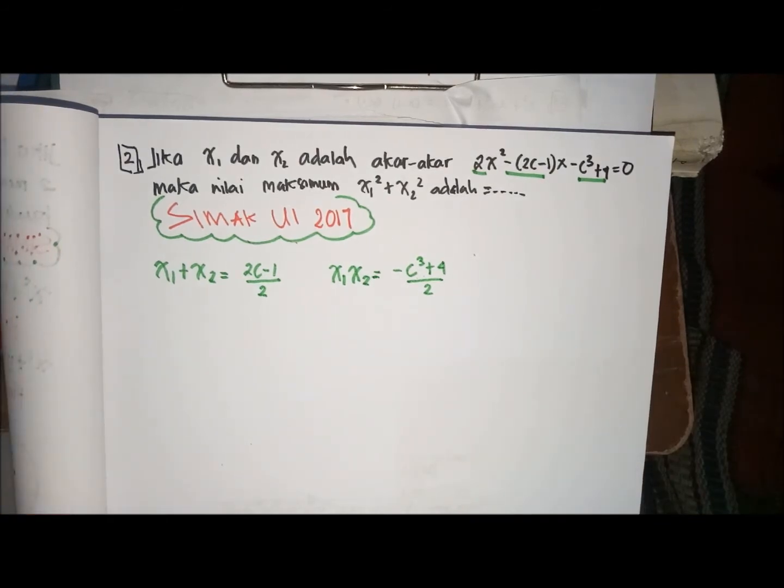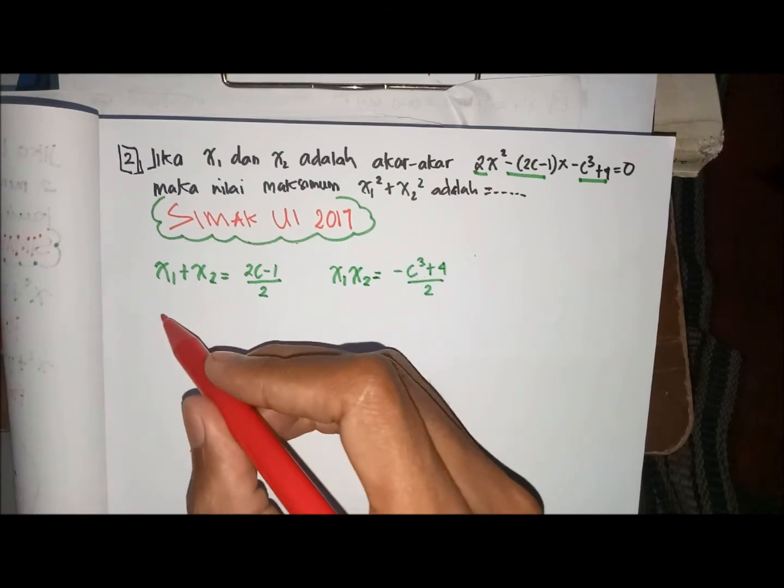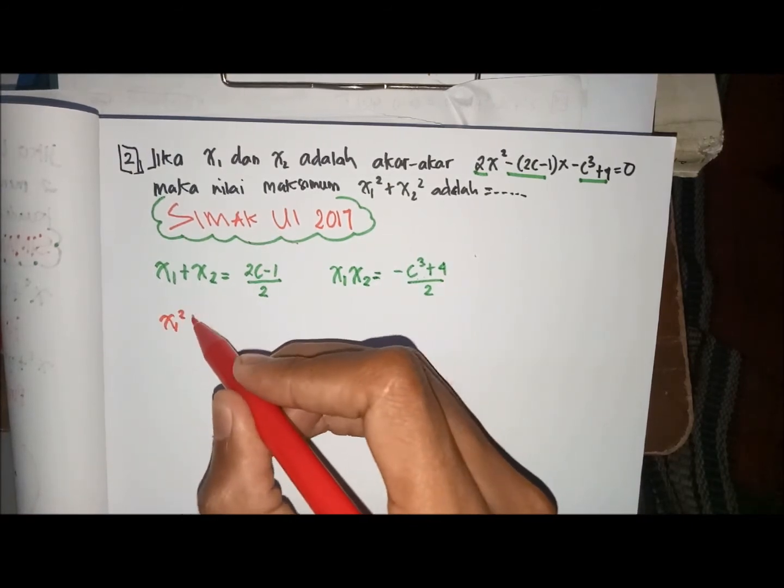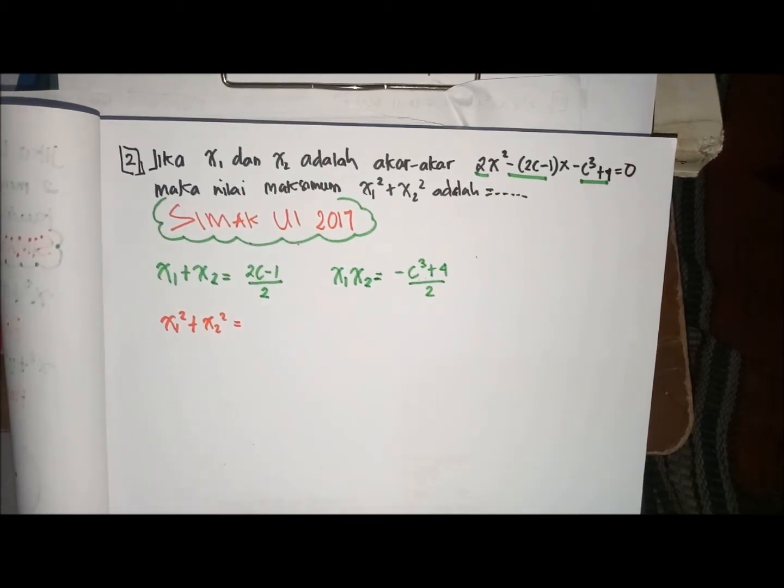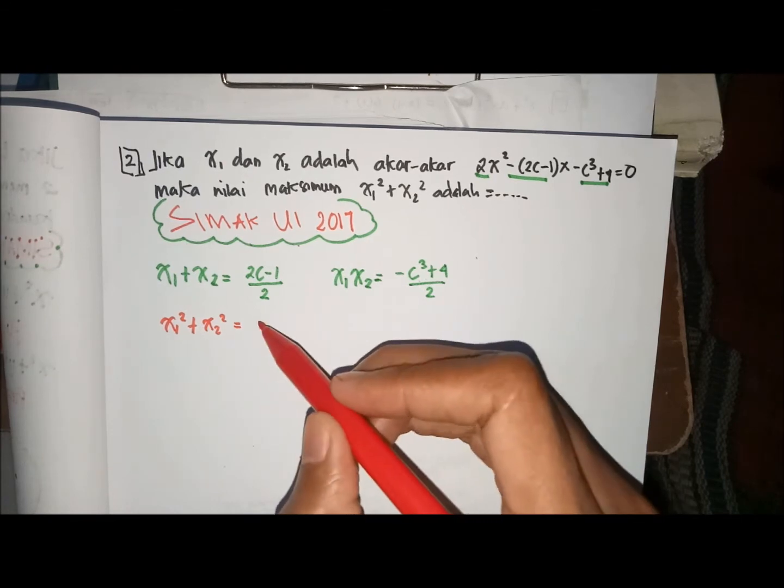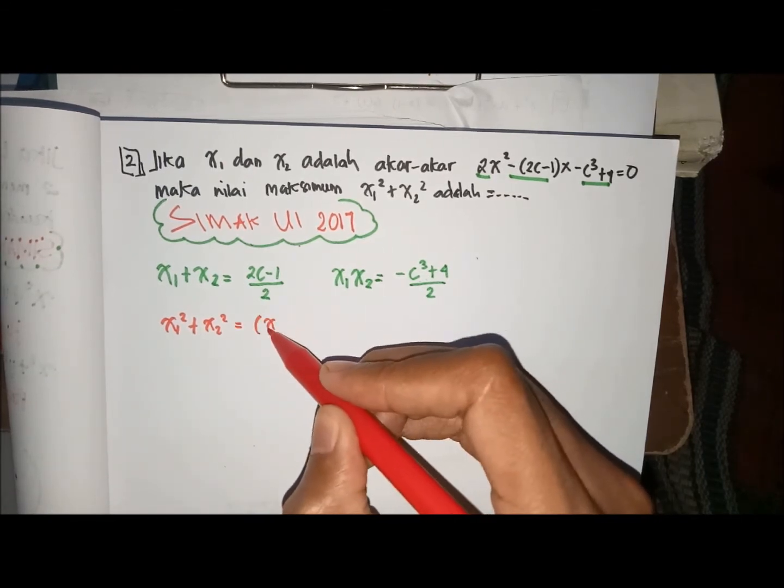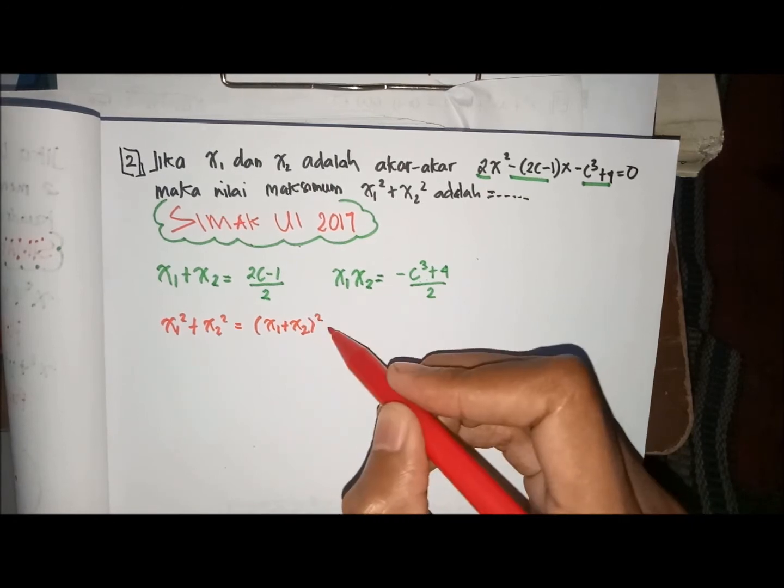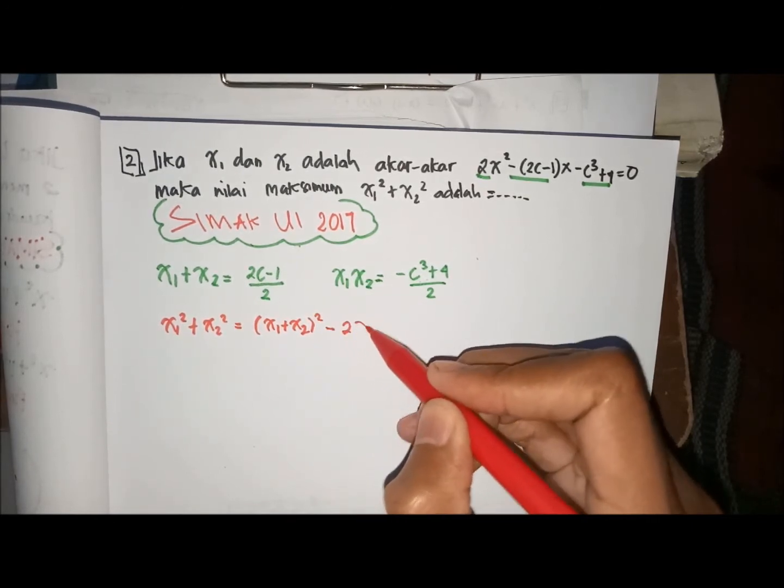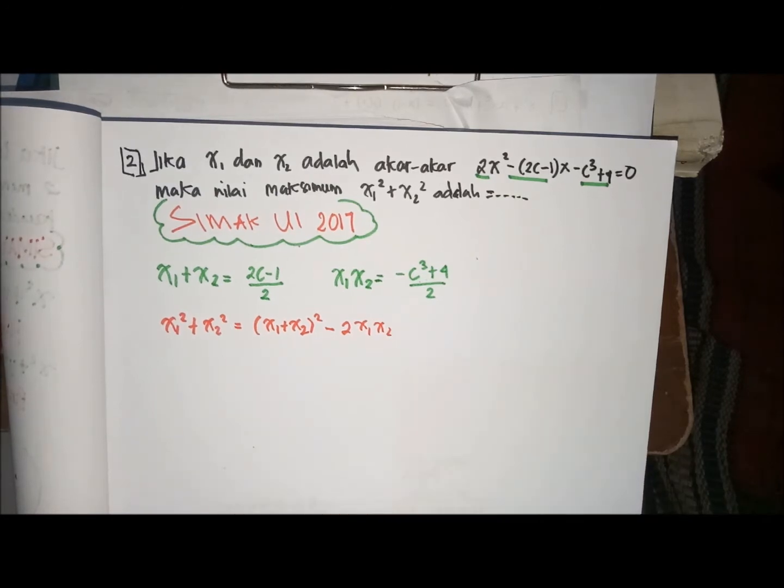mencari nilai maksimum dari X1 kuadrat plus X2 kuadrat. Kita ketahui bahwa X1 kuadrat plus X2 kuadrat itu sama dengan X1 plus X2 kuadrat min 2X1 X2.